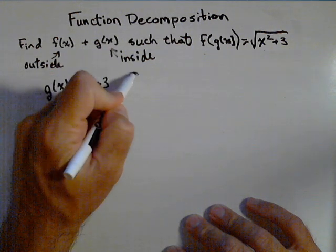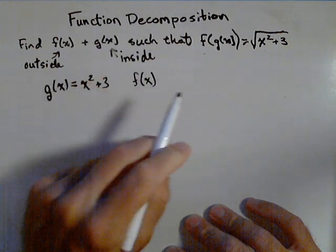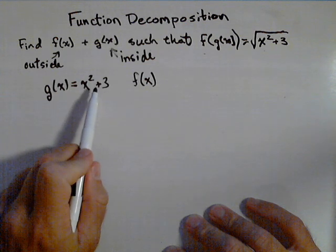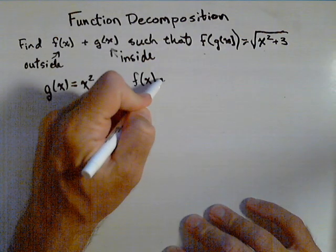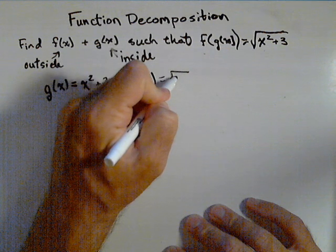well then, our outside function f of x, well what's happening to x squared plus three as an input, it's just being square rooted, would be square root of x.